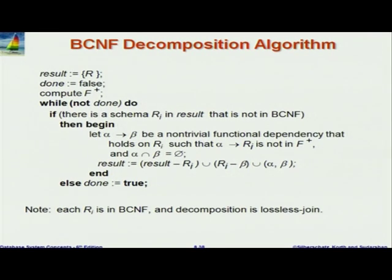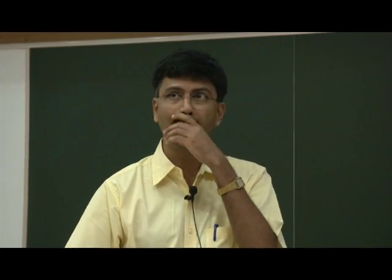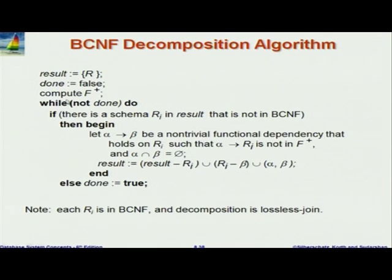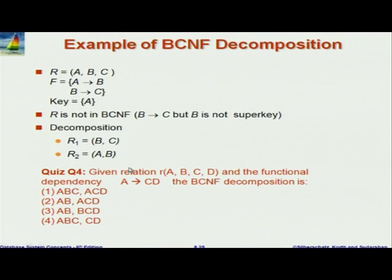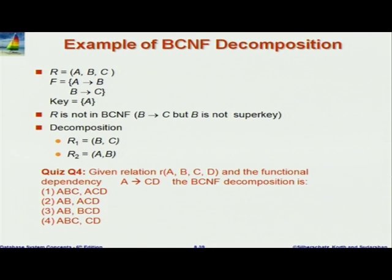So finally, this leads us to the BCNF decomposition algorithm which we can implement. This algorithm says compute F+, but we can do it more efficiently without computing F+ by the variant which we just showed. This particular one does not guarantee dependency preservation. Now take quiz question Q4: compute the BCNF decomposition. We first create ACD, and what is left is ABCD minus CD, which is AB. So the answer is AB and ACD.